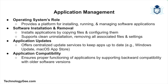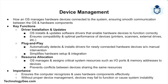The operating system may also provide a centralized update service for keeping software current, like Windows Update or the App Store on macOS. It is also responsible for application compatibility, ensuring applications run correctly by providing backward compatibility for older software versions. In summary, the operating system ensures that applications are correctly installed, run without issues, and are kept up to date.